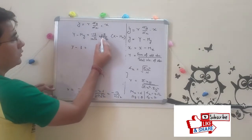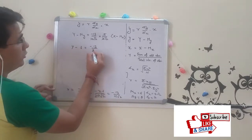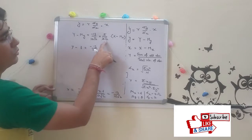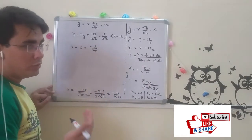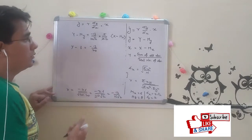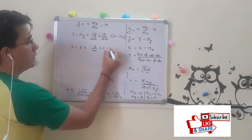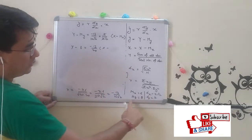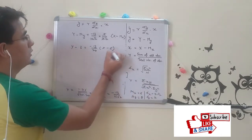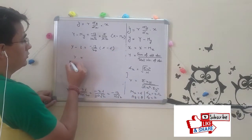Y minus mean of Y equals minus 13 upon 4, because root 2 times root 2 is 2, times (x minus mean of x). Mean of x is 6.